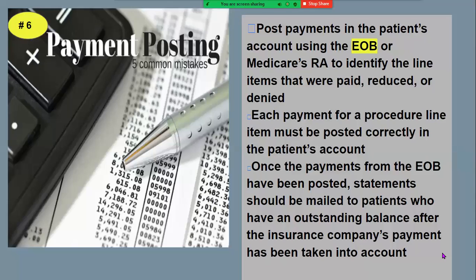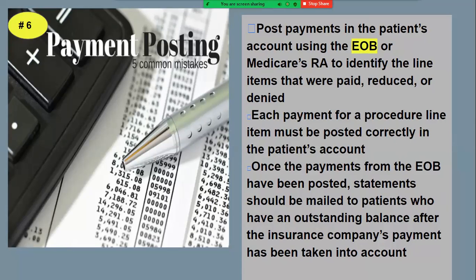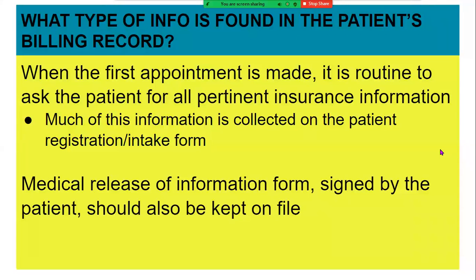The next step is payment posting. You're going to post payments to the patient's account using the EOB — that's why I was showing you all of that. You can also get something called a Medicare RA, or remittance advice, which looks similar to an EOB but has many patients on one document. If you're a payment poster, these are the steps you'll take, but that will be on-the-job training.